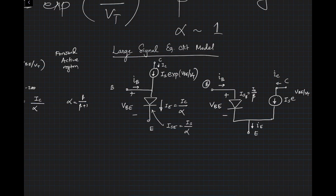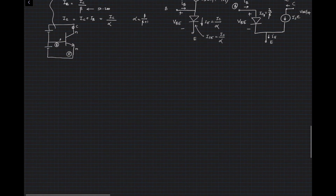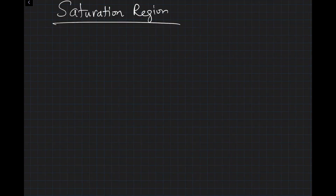All this analysis applies during the forward active region. What happens when both junctions are forward biased — base-emitter as well as base-collector? We call that the saturation region.